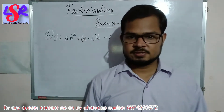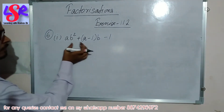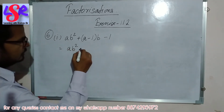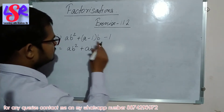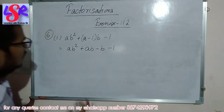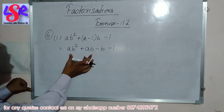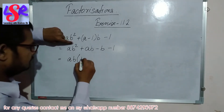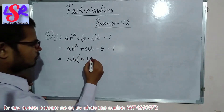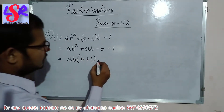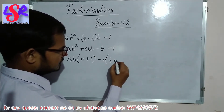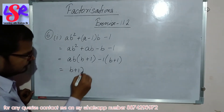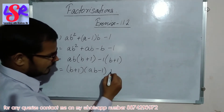Question number 6 — here we are having ab squared plus a minus (1 times b) minus 1. We open the bracket to get ab squared plus ab minus b minus 1. From the first two we take ab as common, leaving b plus 1. From the last two we take minus 1 as common, leaving b plus 1. The bracket is common, so the answer is (b plus 1)(ab minus 1).